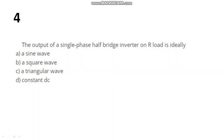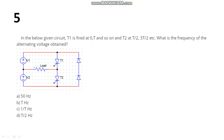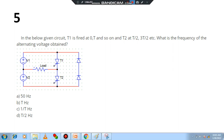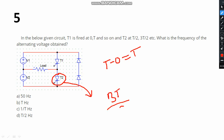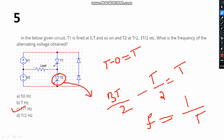Question number 5: T1 is fired at 0, T, and so on, while T2 is fired at T/2, 3T/2. What is the frequency of alternating voltage obtained? T1 operates between 0 and T, so the time period is T. For T2, the difference between 3T/2 and T/2 is 2T/2 = T. So the time period is T, and frequency is 1/T. Please select option C.